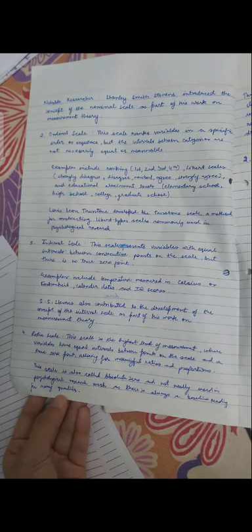So we talked about that variables can be equal intervals in interval scale between the two consecutive points on a scale, and there is no absolute zero like in temperature, Celsius, Fahrenheit, or calendar dates, or IQ score. So Stephen Stanley Smith has given this concept.